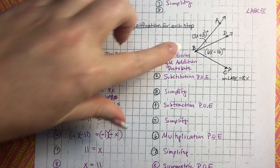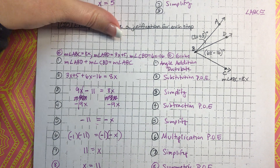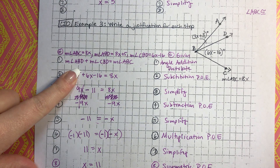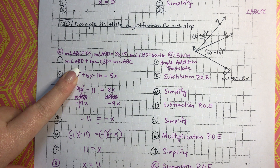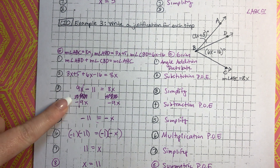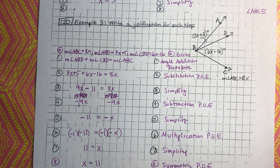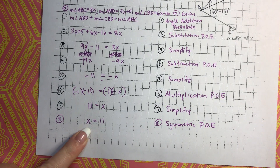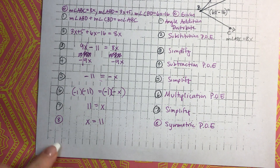We saw this picture, knew it was an angle addition postulate, wrote down all our given information, then wrote the angle addition postulate in symbols — super important. Then we substituted the values in, simplified, used our algebra skills, and justified everything. We used the symmetric property of equality at the end to make sure x was written on the left side. We'll be back in a little bit for example four.